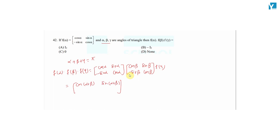For the bottom-left element: -sin α · cos β - cos α · sin β, which gives us -sin(α + β). For the bottom-right element: -sin α · sin β + cos α · cos β, which equals cos α cos β - sin α sin β, giving us cos(α + β).